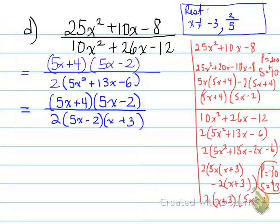Once we've written out the license, we can now cancel 5x minus 2, and we're left with 5x plus 4 on top. And on the bottom, 2 times x plus 3.